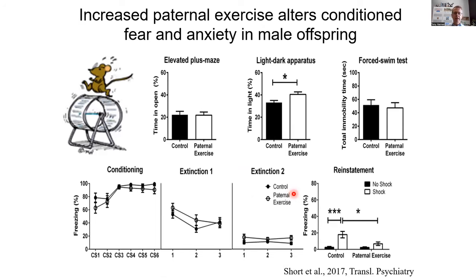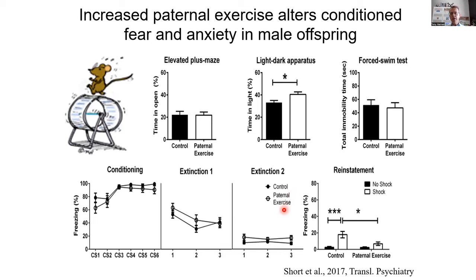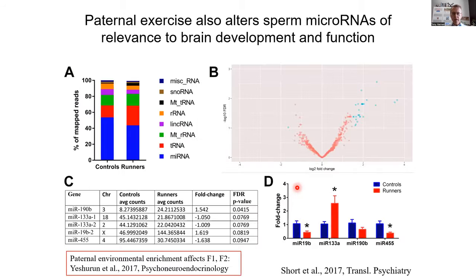In a separate study, fathers were given increased exercise through wheel running versus standard housing. This exercise had specific effects on offspring, on particular affective and cognitive endophenotypes. Looking at the sperm of the fathers and extracting small non-coding RNAs, there are a range of different small non-coding RNAs affected — not just microRNAs, but particular tRNA fragments that change with paternal exercise.